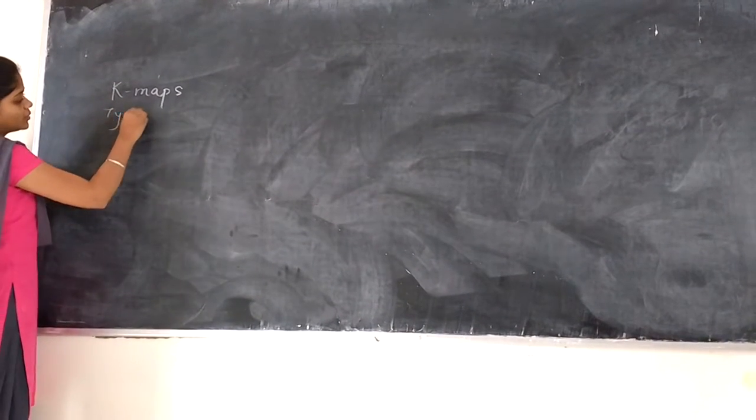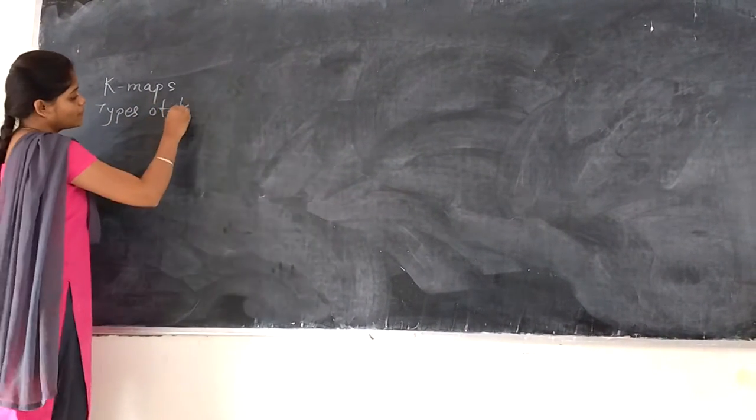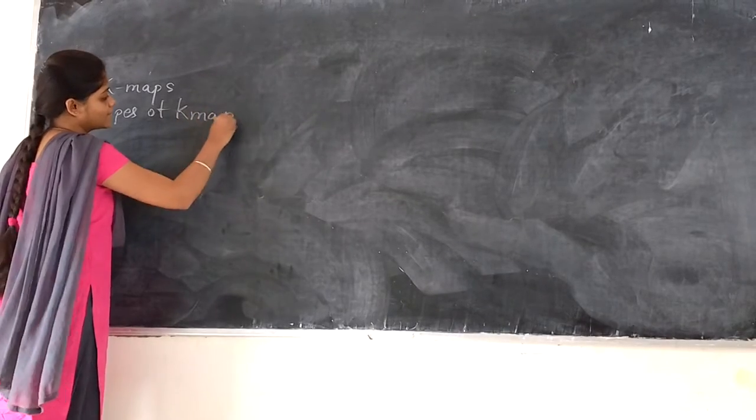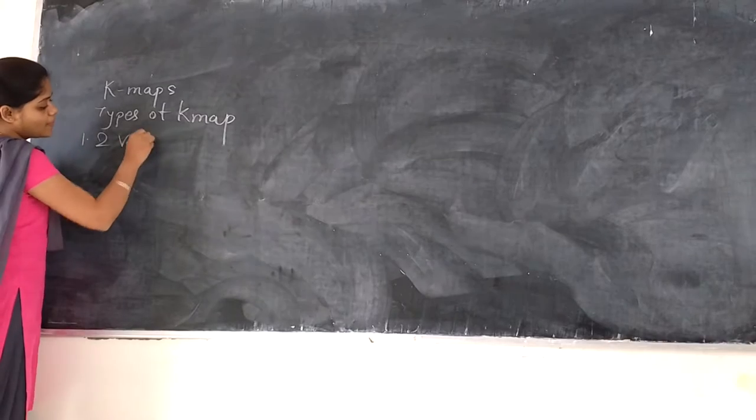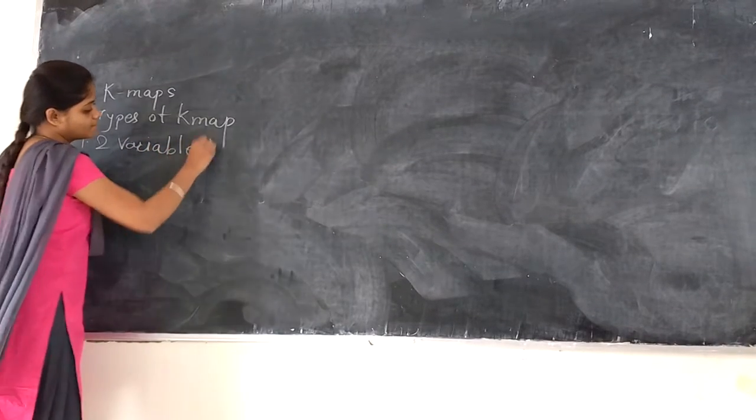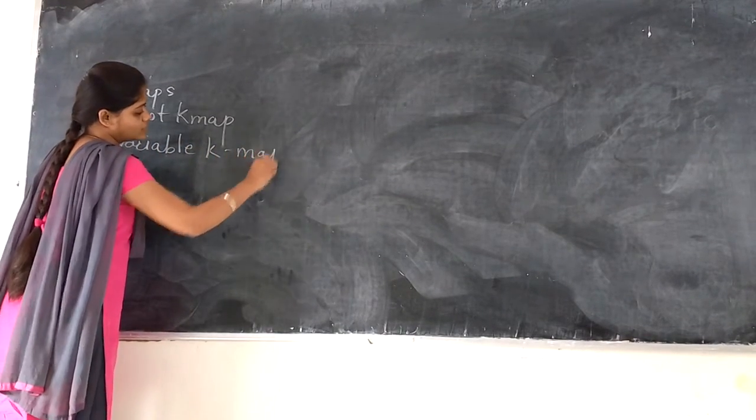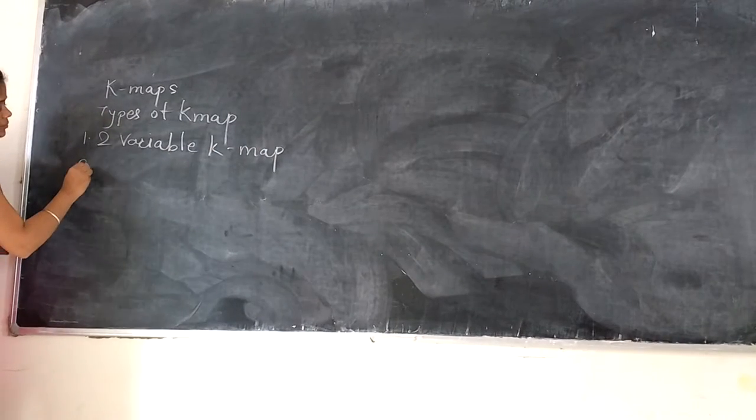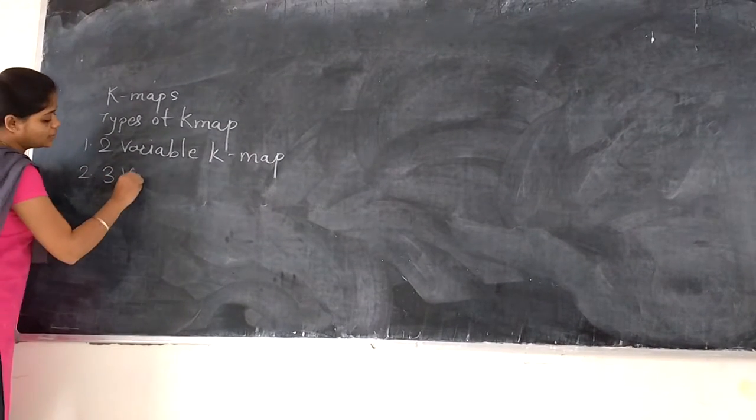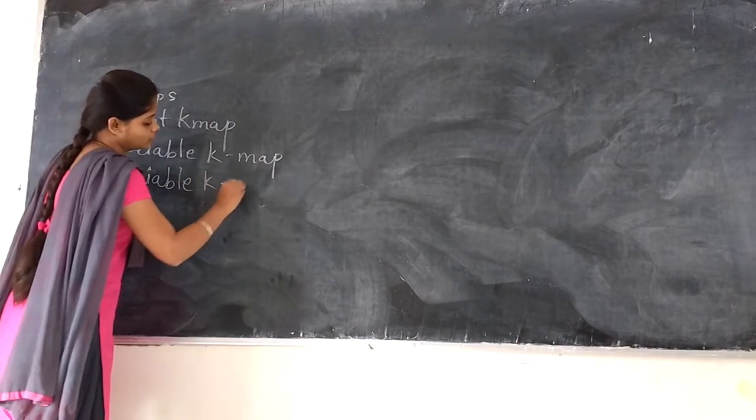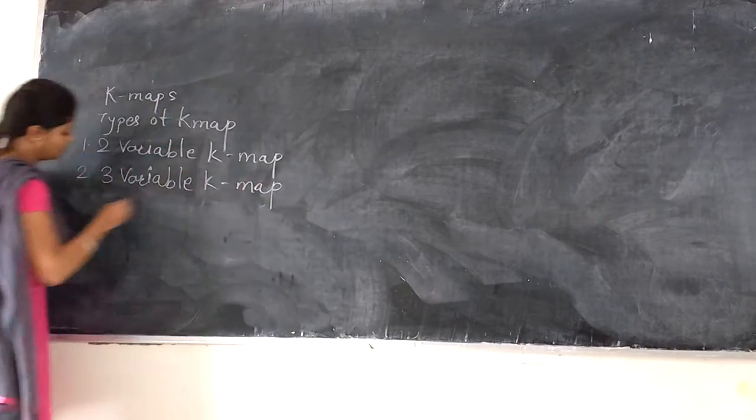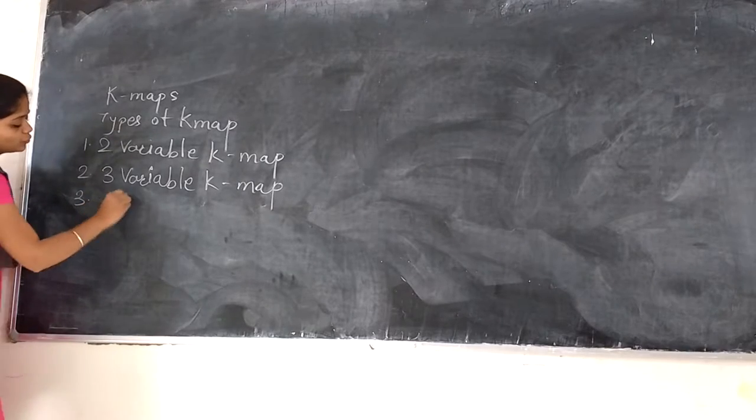First is types of K-map. Two variable K-map, three variable K-map, four variable K-map.